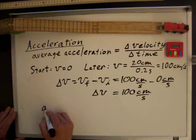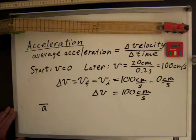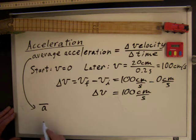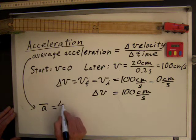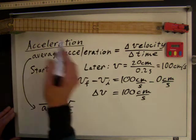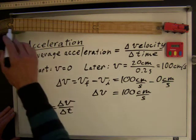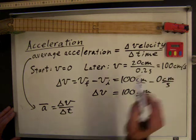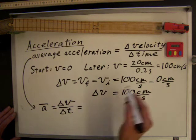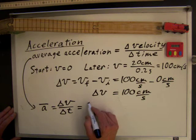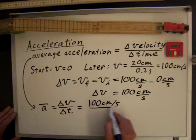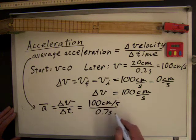So the average acceleration, which you write as a with a bar on top of it, it's the same thing as average acceleration. That's the change in velocity over the change in time in which the velocity was changing. So the velocity changed from 0 to 100 centimeters per second and the time it took was 0.68 seconds. I'll make that 0.7 seconds. So that's 100 centimeters per second over 0.7 seconds.